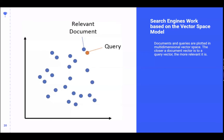Let's talk about vectors and close the disconnect between what people may know about search. The vector space model is how all search engines work — you plot documents or pages in multi-dimensional space, you also plot queries in multi-dimensional space, and the documents physically closest to the queries are considered the most relevant. In Google's environment, they treat the vectors for queries differently from vectors for documents, as seen in their embedding models for Vertex AI.